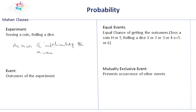Event means what? Event is nothing but the outcomes. Suppose if we are tossing a coin, we will get either head or tail. That outcome of head or tail is called the event. The outcomes of the experiment are called events.